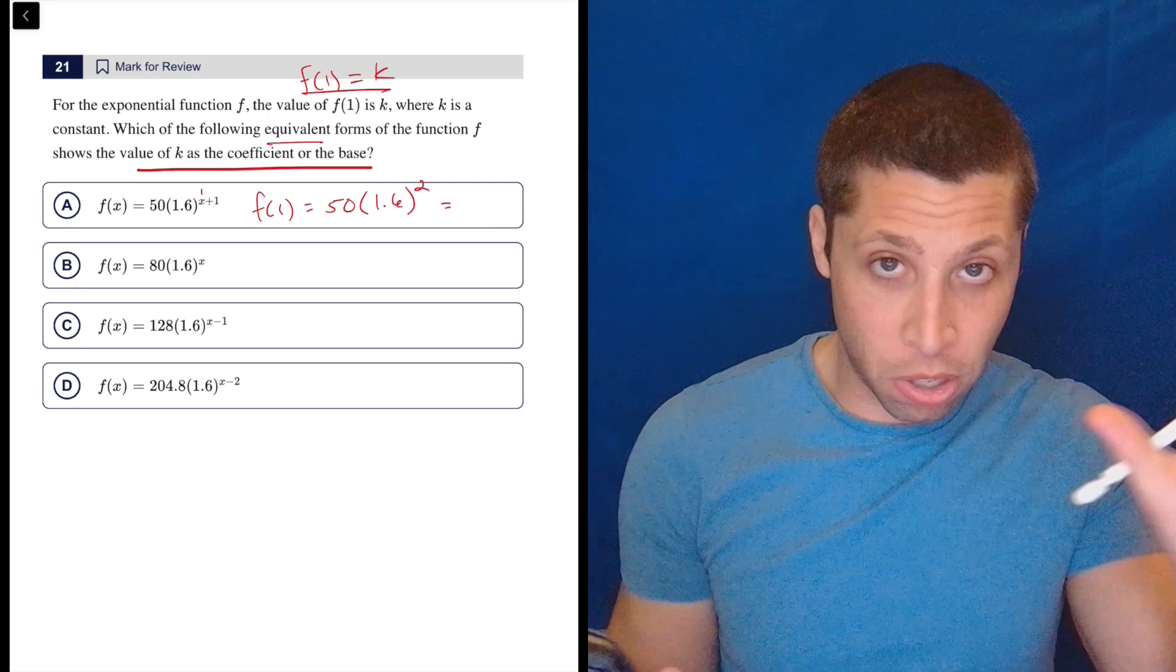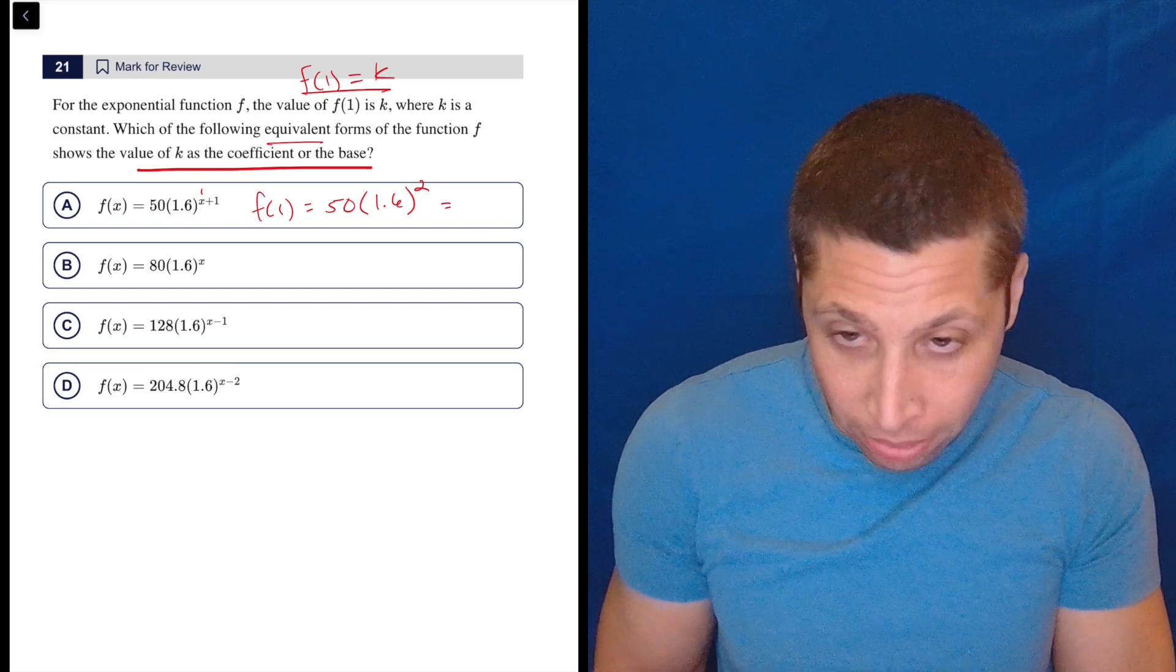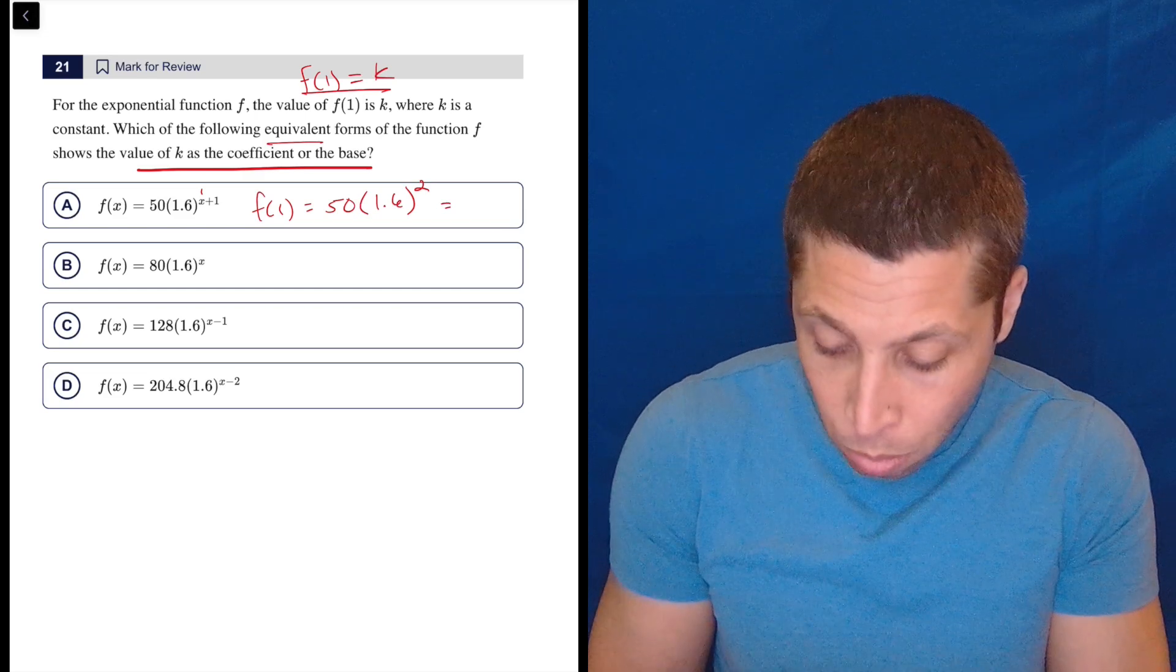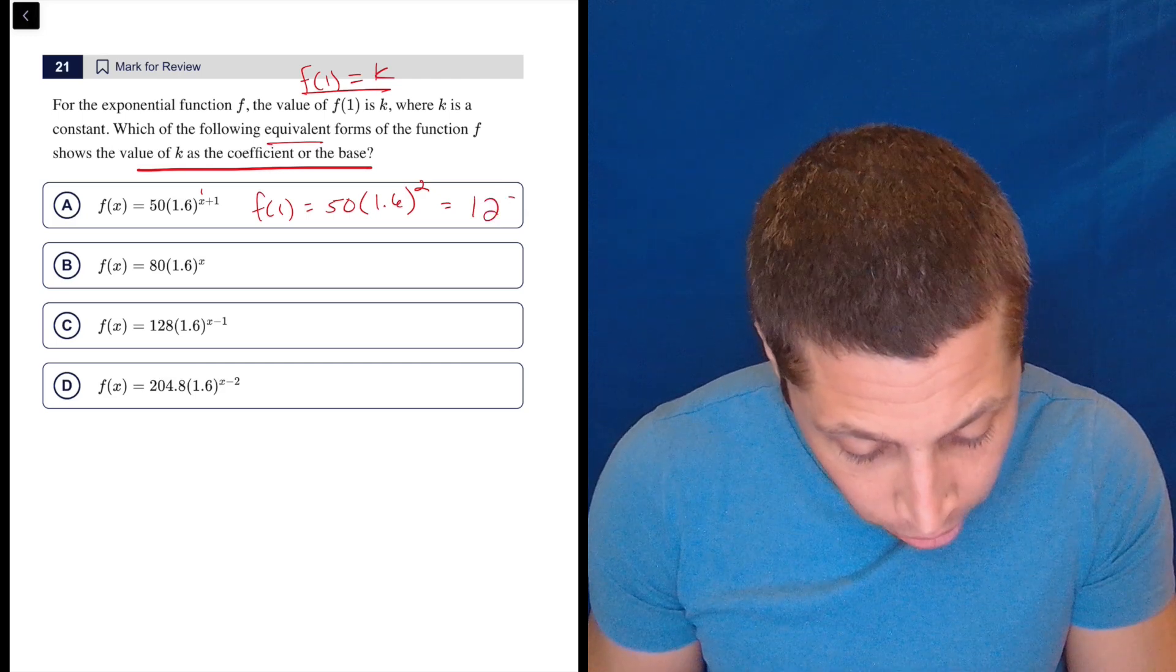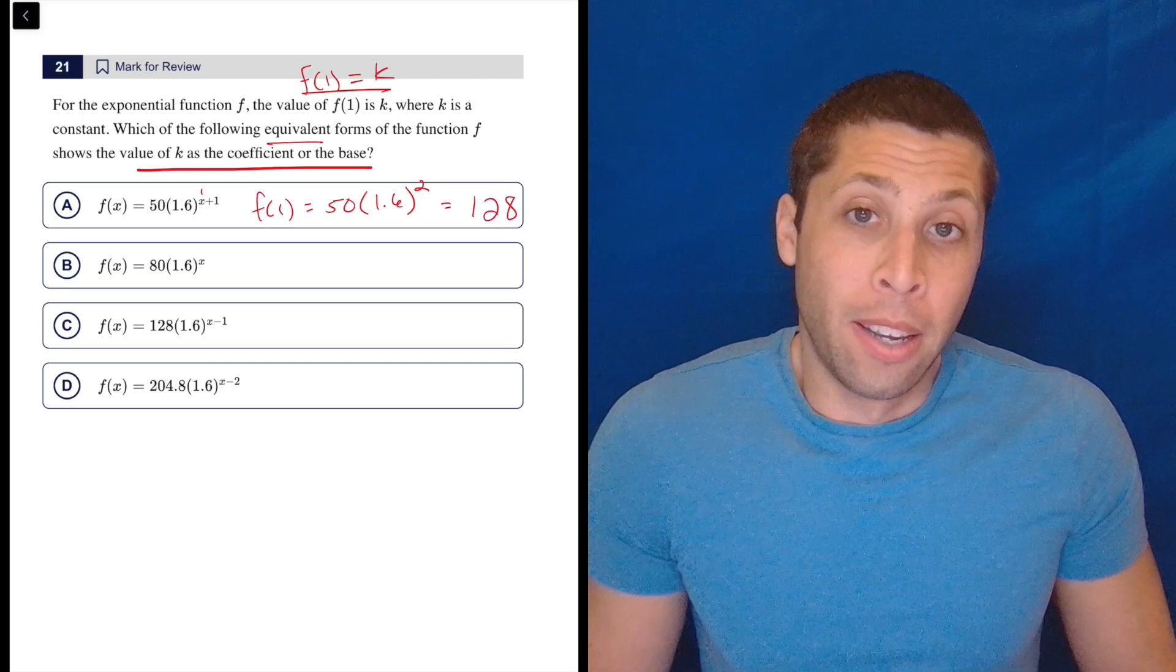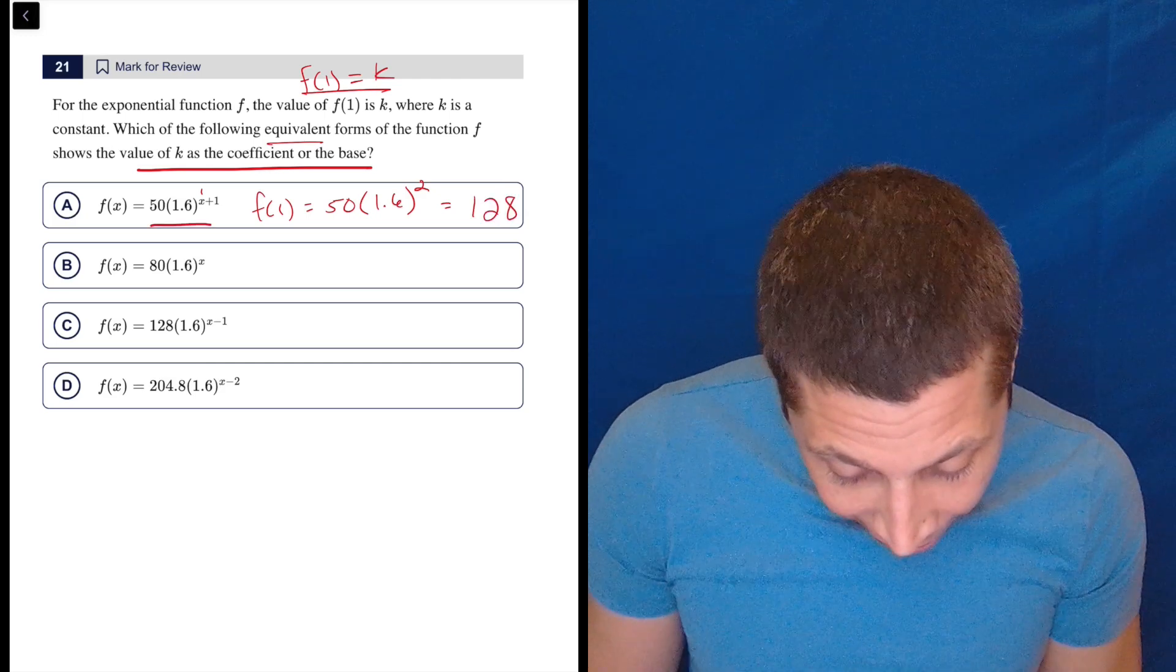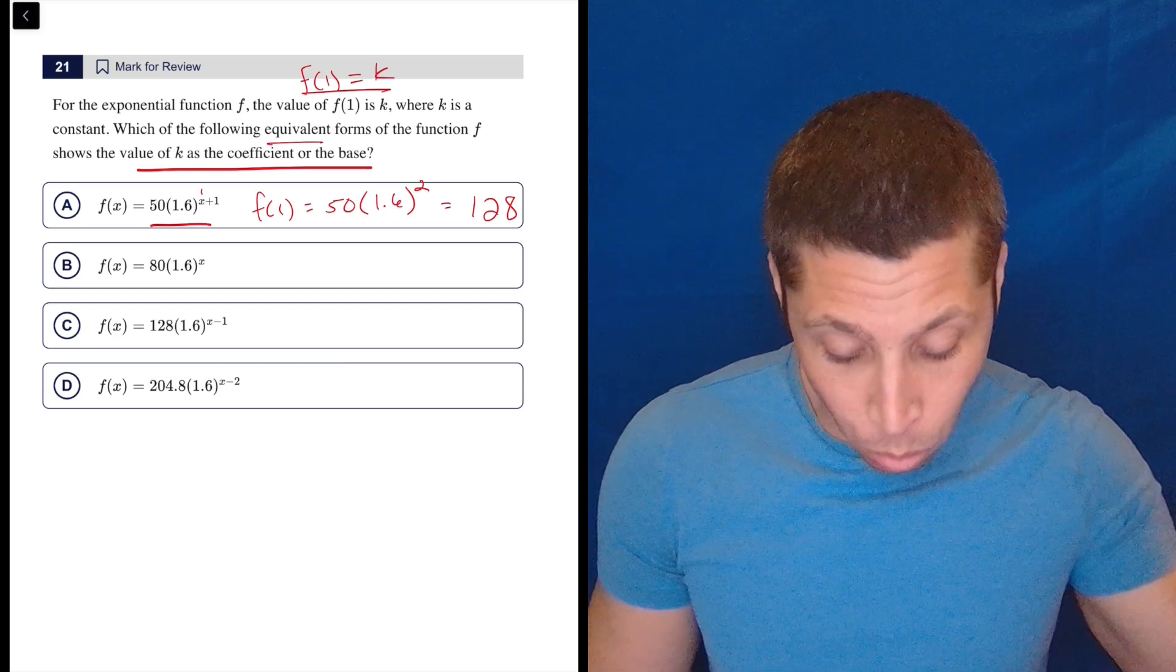So this is definitely going to be wrong, but for the sake of showing you. So if I do 1.6 squared times 50, I get 128. So 128, look, it's nowhere to be found in this equation.